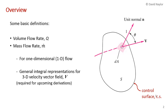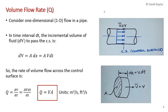We need these definitions of Q and m-dot for some upcoming theoretical derivations that are in Chapter 3. So let's start with the volume flow rate, and here I'm going to consider a one-dimensional flow in a pipe.